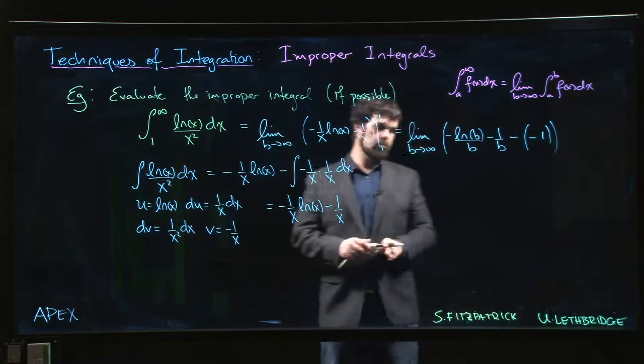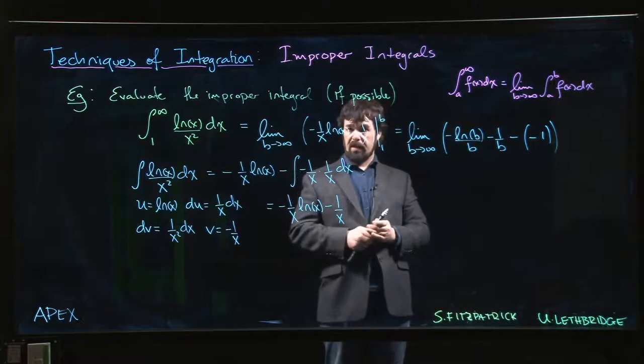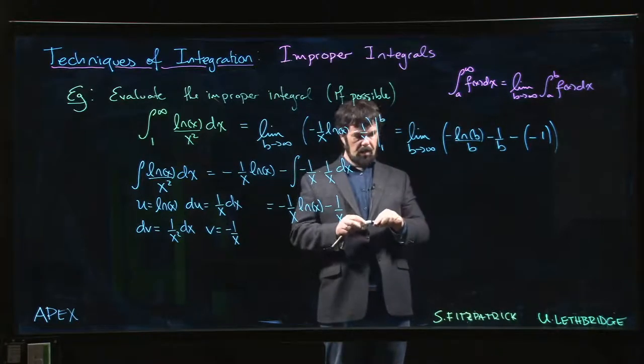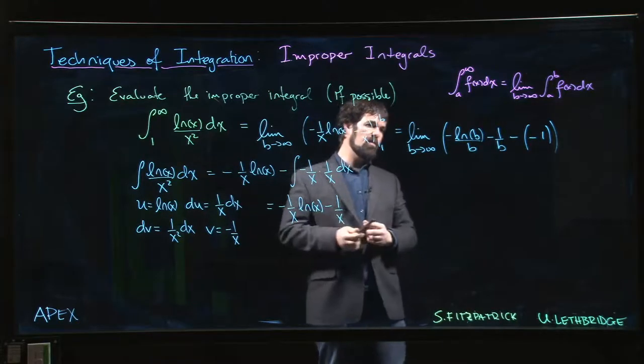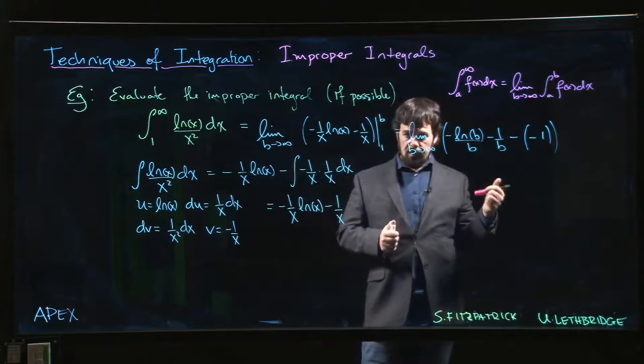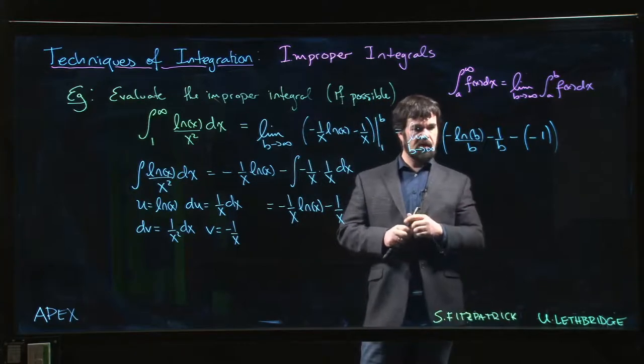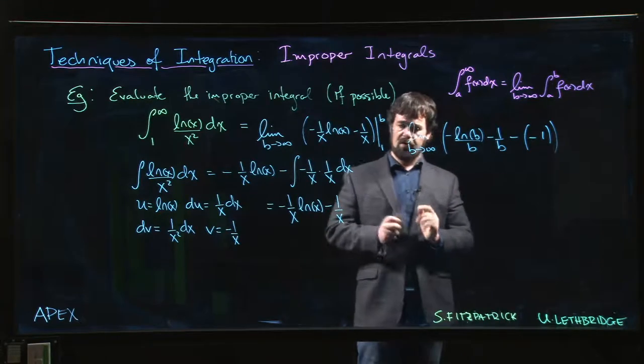For this one here, that's an infinity over infinity limit. Now, if you have this intuition that the logarithm function grows much more slowly than any power function, you probably know that this limit should be 0.